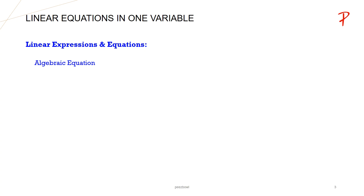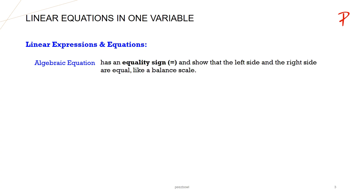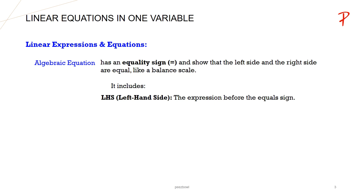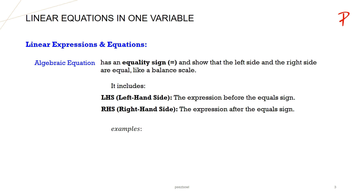Let us understand an equation. An algebraic equation has an equality sign and shows that the left side and the right side are equal, like a balance scale. It includes LHS or left hand side — the expression before the equal sign — and RHS or right hand side — the expression after the equal sign. Here are a few examples of equations: 4x=24, 5y-2=8, and 3x-5=4.